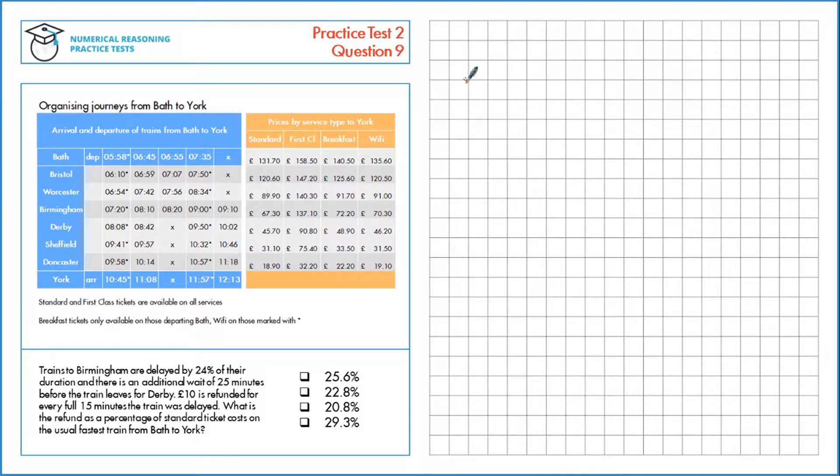First let's identify the fastest train from Bath to York. These three trains go from Bath to York and the fastest one here is the 7:35. The way we find that is by taking the arrival time in York, subtracting the departure time in Bath.